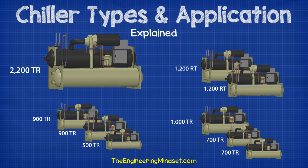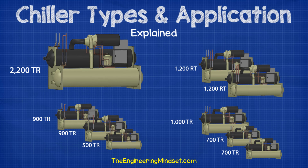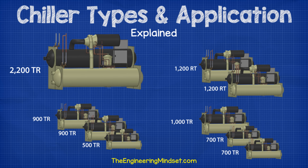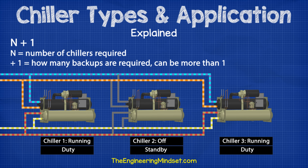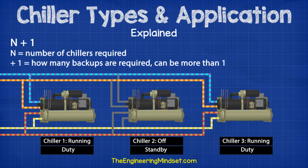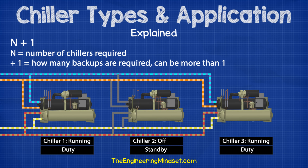Using only one chiller is not efficient, and if it fails, you will have no cooling capability left. Instead, you should use multiple chillers in parallel of different sizes to meet the changing seasonal load at optimal performance with redundancy built in. For example, a building with a cooling load of 2,200 tons could use two 1,200 ton chillers, or two 900s and a 500 ton chiller, or a 1,000 ton and two 700 ton chillers. You also need to consider the criticality of the building and the redundancy required, known as the N plus number, where N is the number of chillers you need and the plus 1, plus 2, or plus 3 is the number of backup chillers.